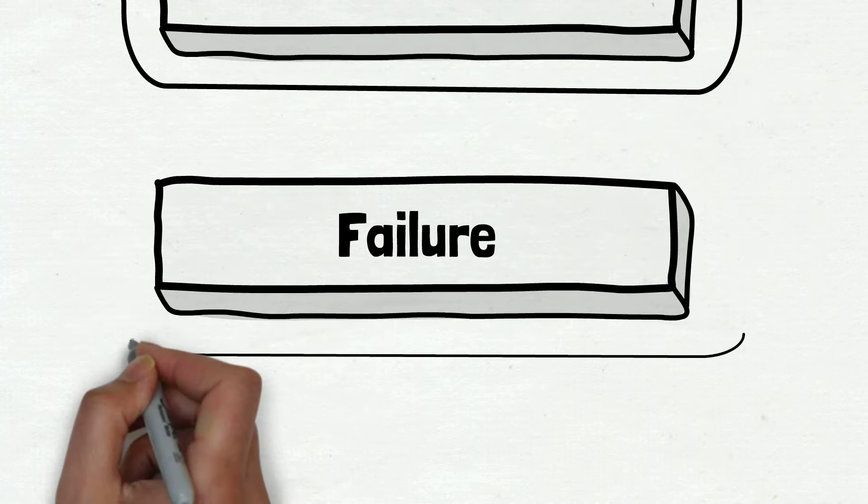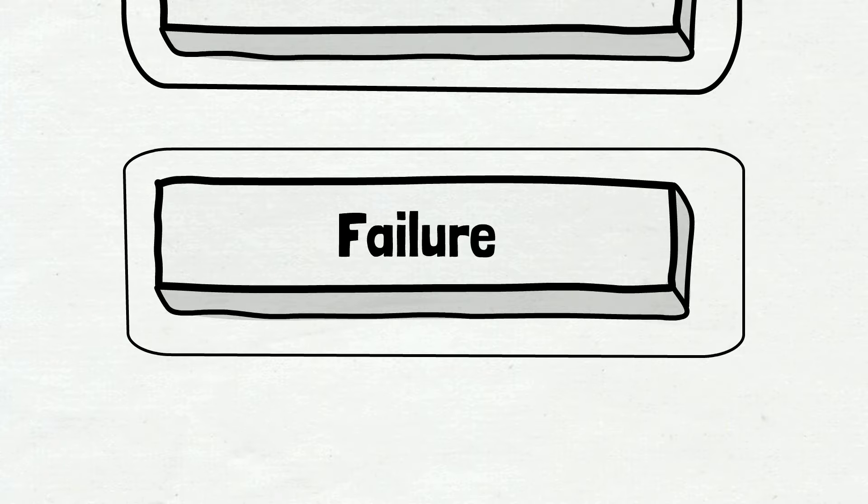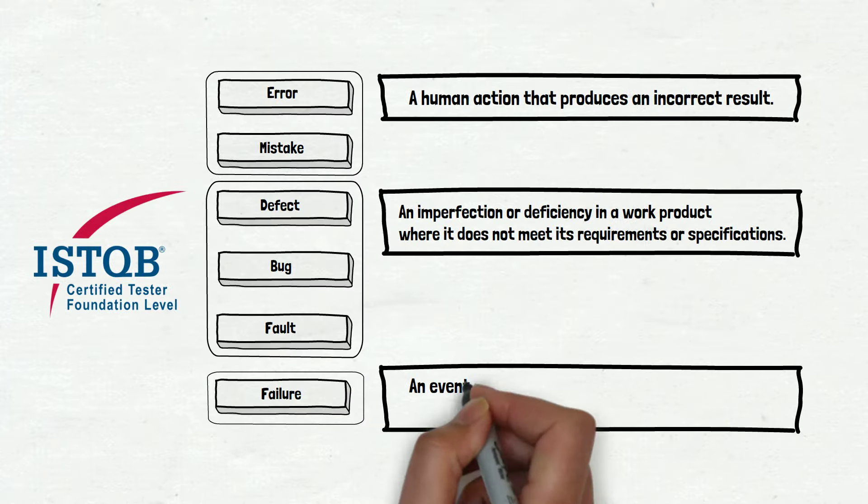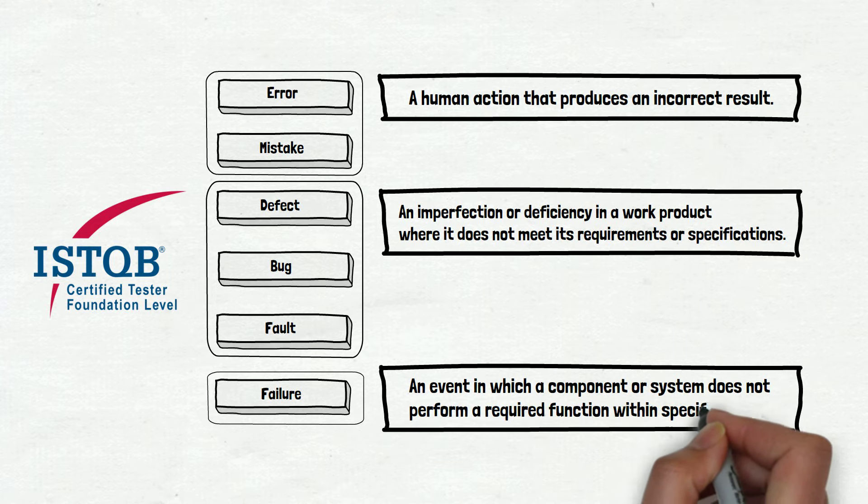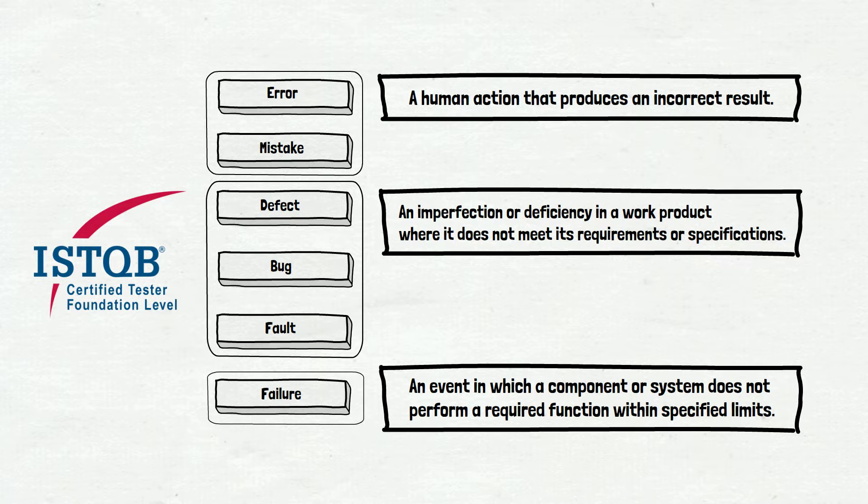The last term is failure. According to the definition, it is an event in which a component or system does not perform a required function within specified limits. And again, it is very theoretical and hard to understand. ISTQB theory is complex, broad, and comprehensive and deserves its own video. If you want, you can check their website, the link to which we will provide in the description.